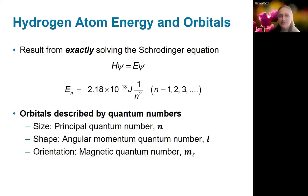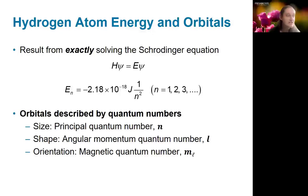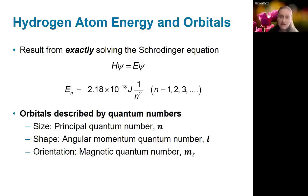We're going to start off by discussing the hydrogen atom energy and orbitals. The Schrödinger equation is the main equation in quantum mechanics used to describe the properties of quantum mechanical particles, and we can solve it exactly for a one-electron system like the hydrogen atom. When we do that, we find that the energies are given by negative 2.18 times 10 to the negative 18 joules times 1 over n squared, where n is the quantum number — an index of the particular solution. The lowest energy one has n equals 1.